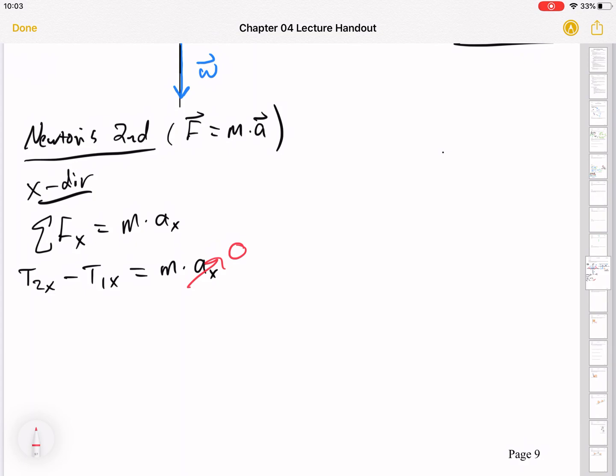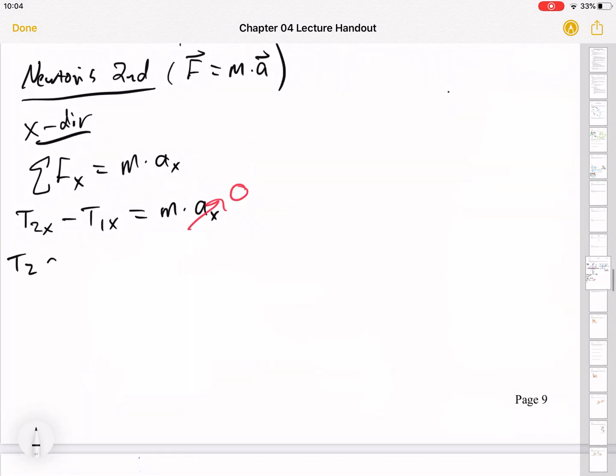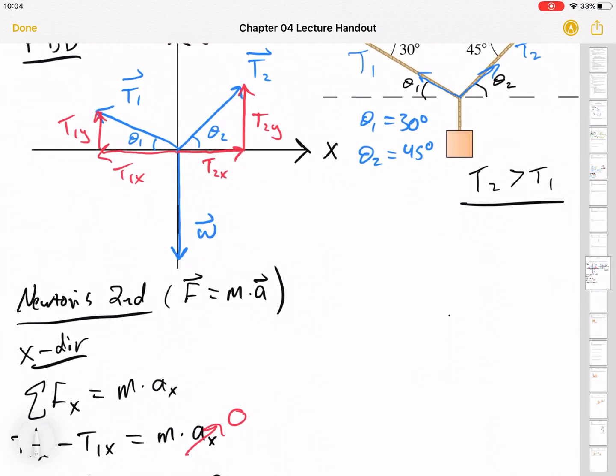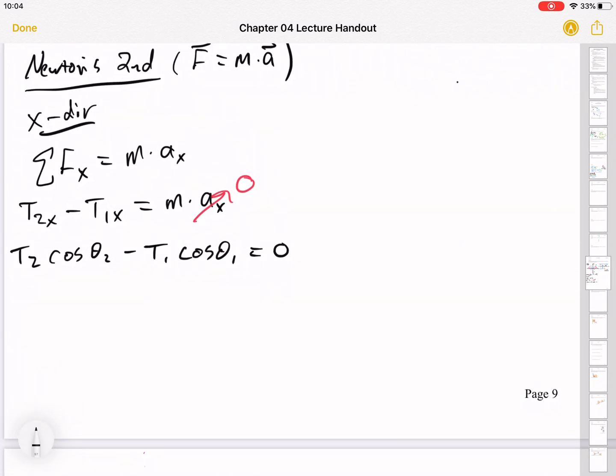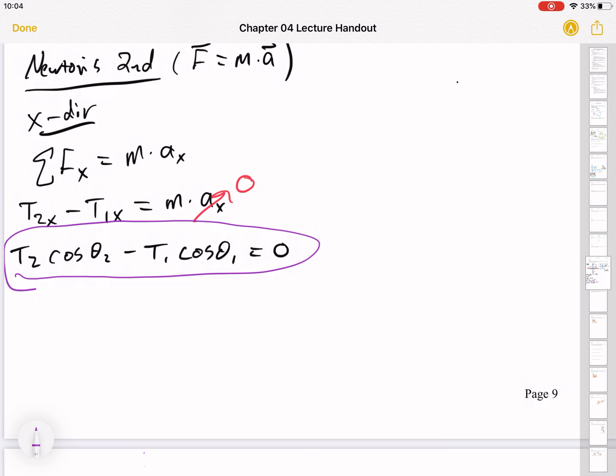So let's do one more line here. T2X, again T2X is the adjacent side to that theta, so that's going to be a cosine. So T2 cosine theta 2 minus T1 cosine theta 1. You can look up there and see that T1X is the same story. Theta is adjacent to that T1X. That's great, but I don't know T1 or T2. I know theta 1 and theta 2. So this is one equation and two unknowns. So I'm going to circle it and say I need more information. I need as many equations as I have unknowns, and this is just one equation.